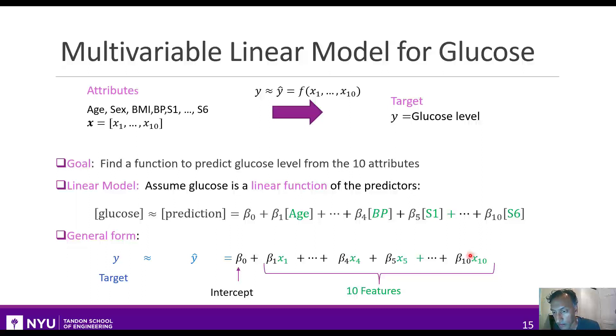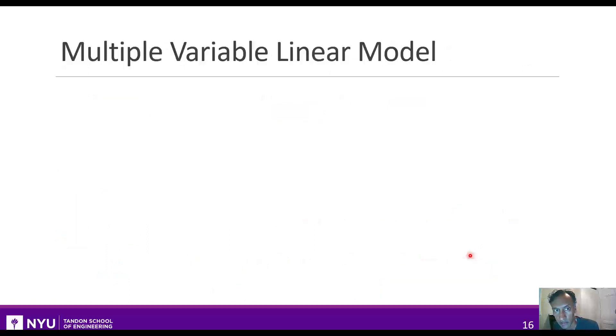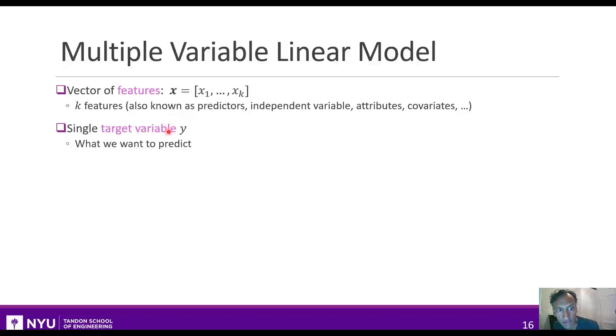With this idea, let's talk about this model in a little bit more general terms. In general, we have k features, which we represent as a vector x_1 to x_k, and these are the predictors. We have some target variable, which for now we'll assume is a scalar real-valued number. This is what we want to predict.